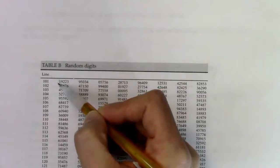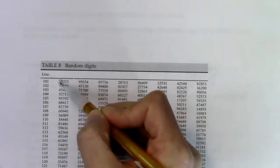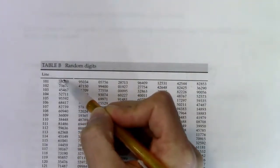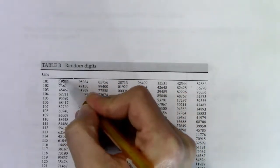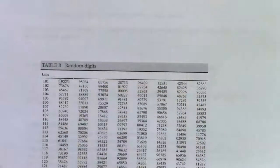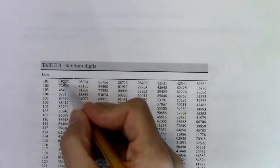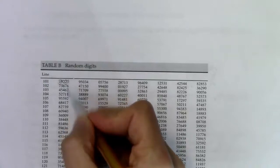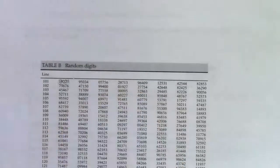Starting with line 101, I got a one, then a nine. Going one digit at a time: two, two, three. These are the actual outcomes when I went along line 101.